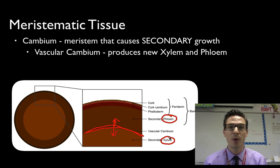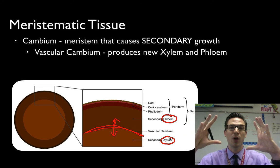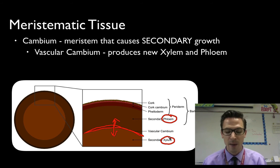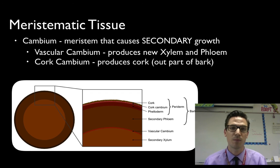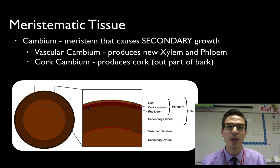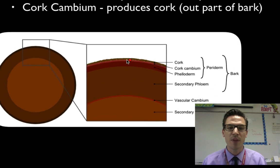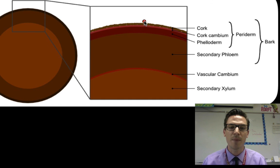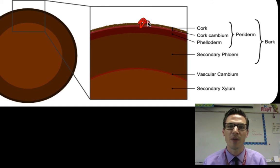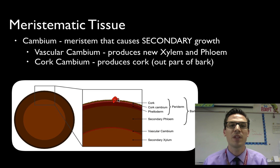As the plant grows wider and wider, it needs more circumference on the outside, so we also need to replace the outer part called the cork. This is done by another type of cambium called cork cambium, which produces cork — the outermost part of the bark. Think of it as the woody trunk of the tree. A layer of cork cambium cells divides, providing more of that cork as a protective layer around the stem of the plant. Both types of cambium together cause that secondary growth.